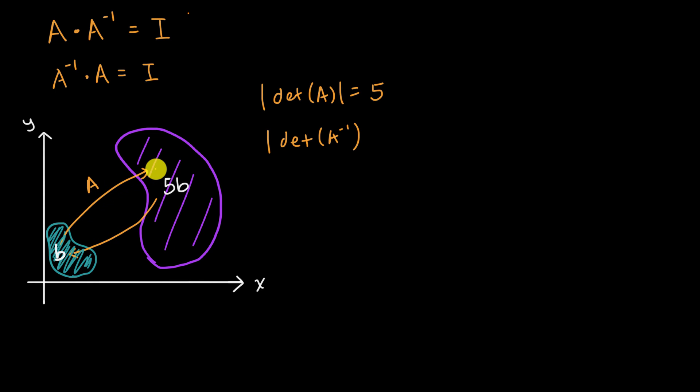Well, if A is scaling up by five, it scales areas up by five, then A inverse must be scaling areas down by five. So the absolute value of the determinant of A inverse should be one over five. And so now we have a general property. I just happened to use the number five here, but generally speaking, the absolute value of the determinant of matrix A, if it has an inverse, should be equal to one over the absolute value of the determinant of A inverse.